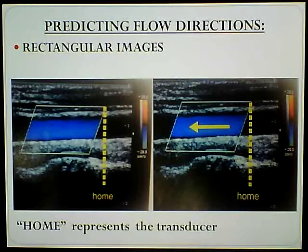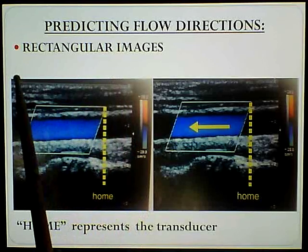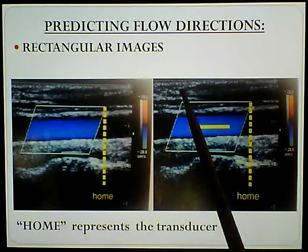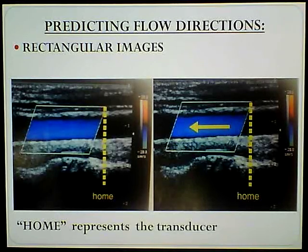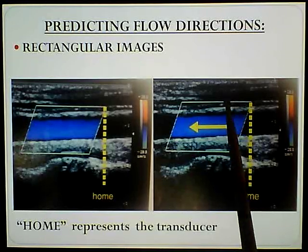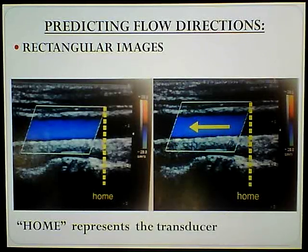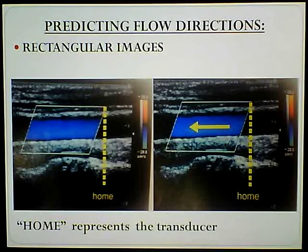Now we're going to look at predicting flow directions with rectangular images. We're going to follow certain rules for rectangular-shaped images. You see the rectangular image, you also have the rectangular box, and it will be steered a certain way. This one is kind of slanted down this way - same with this one. You may see it slanted down this way. Either example, it will work. The rules to follow are simple.